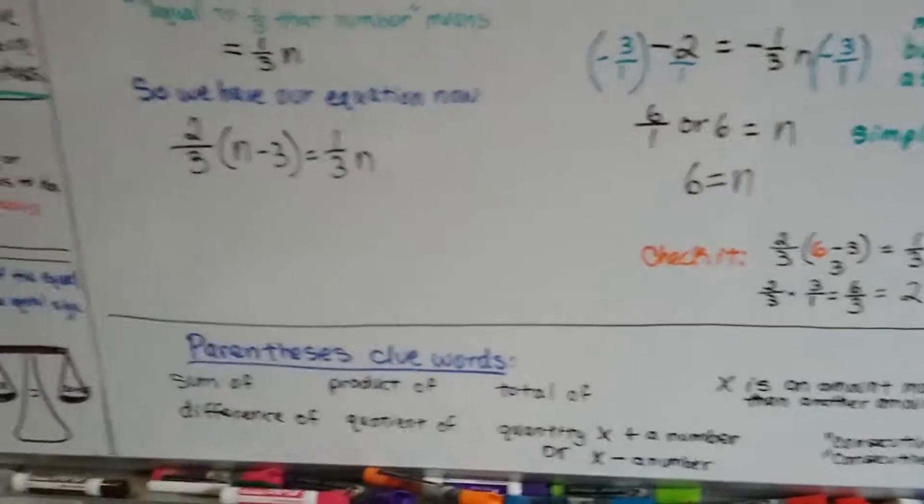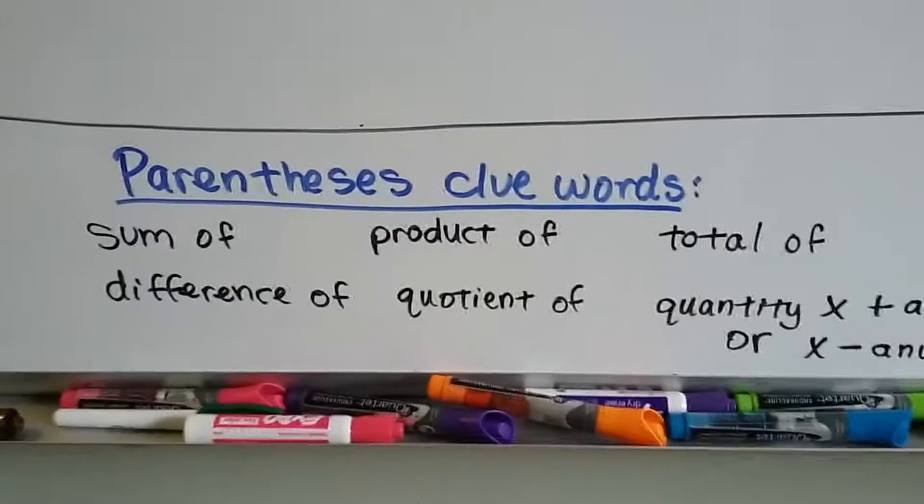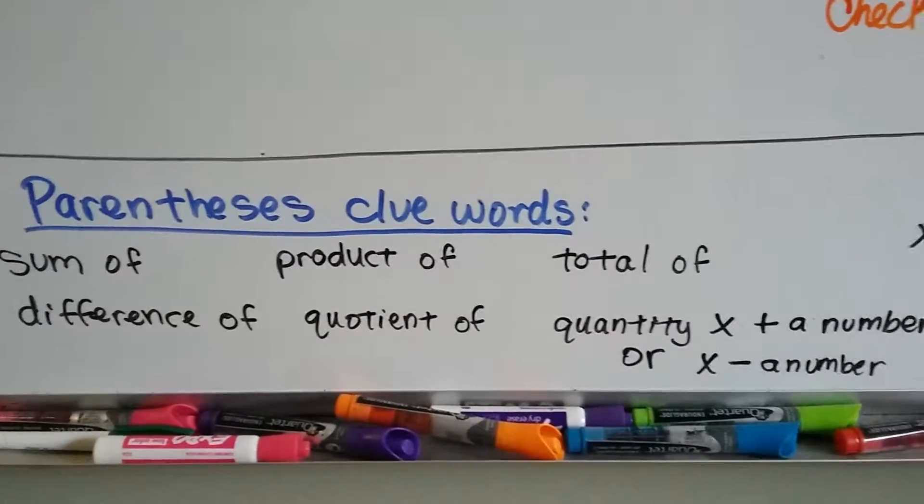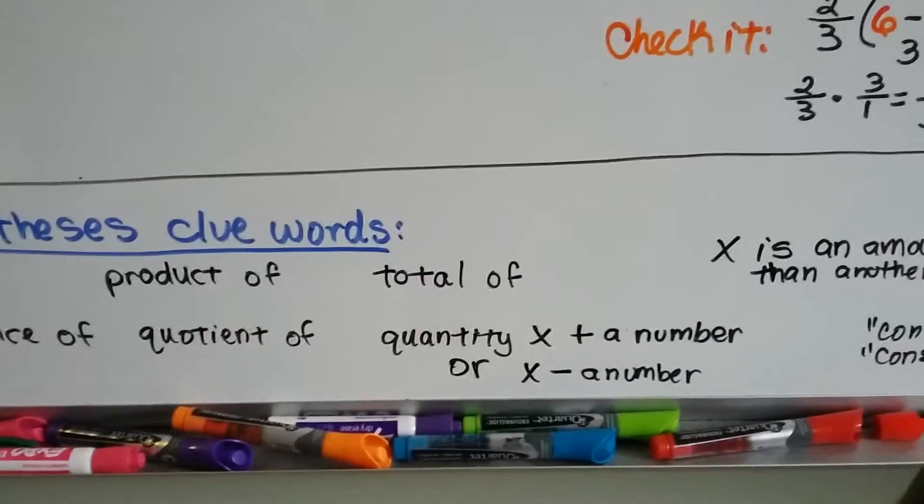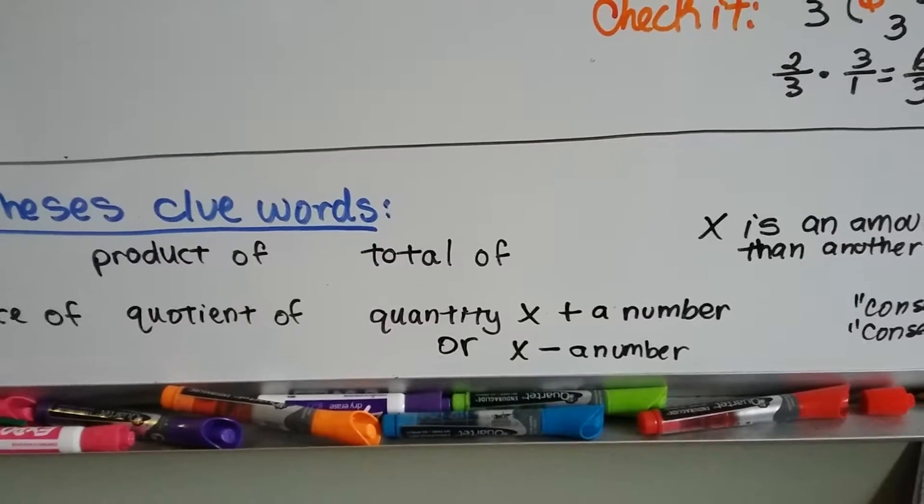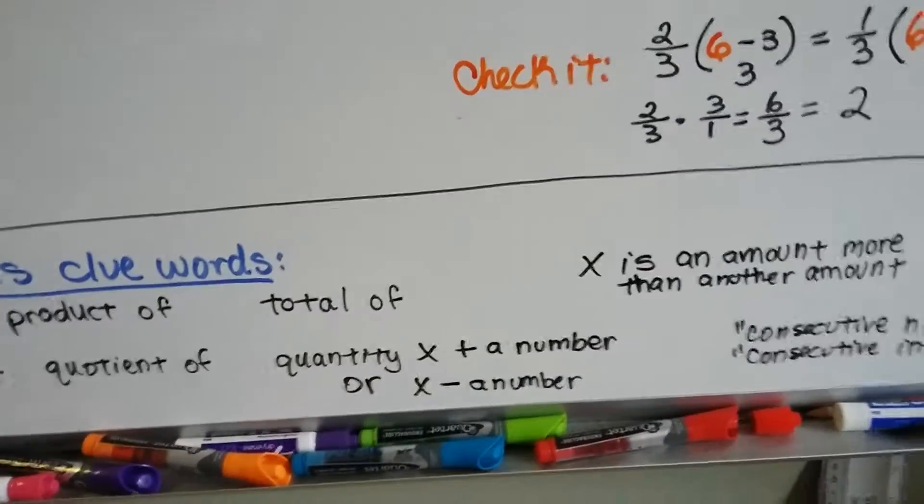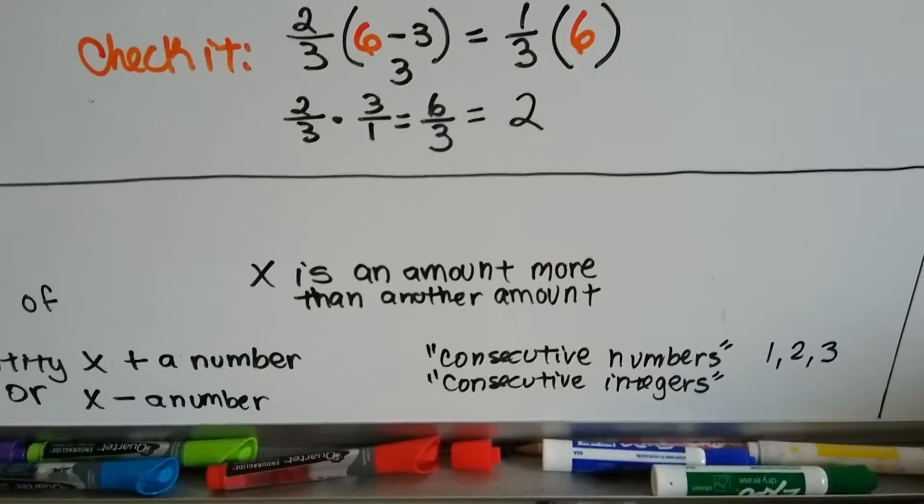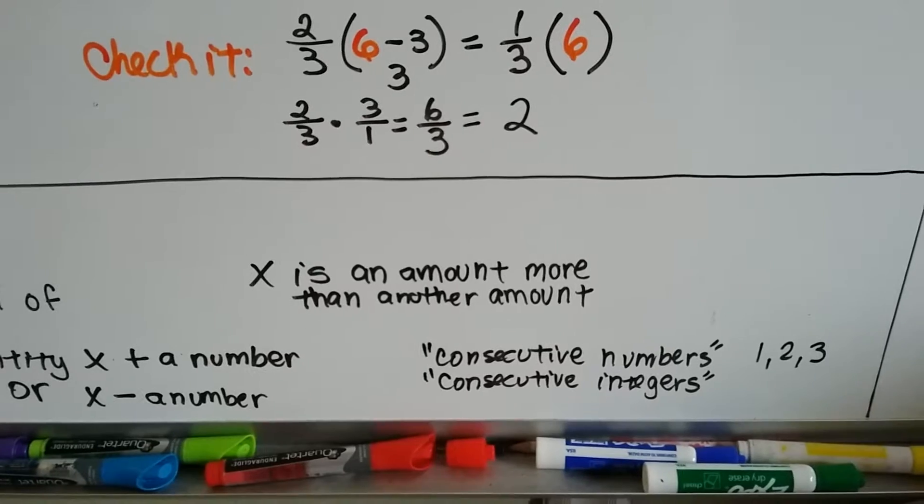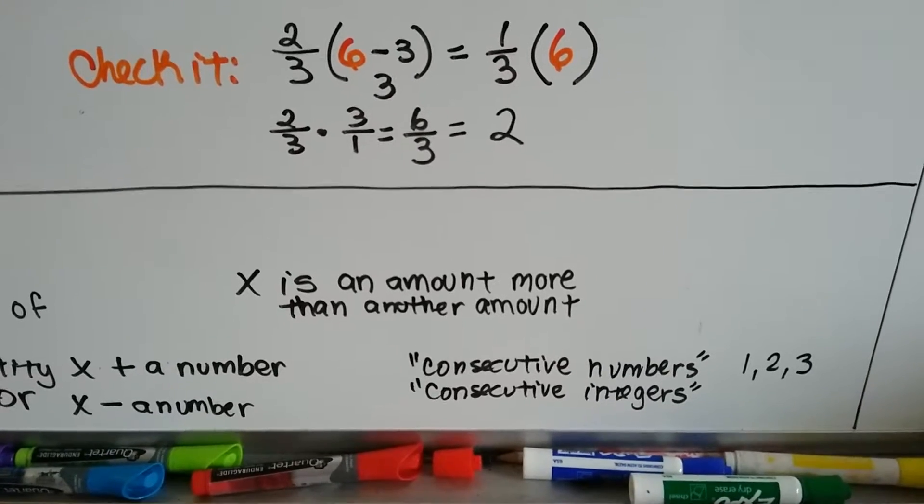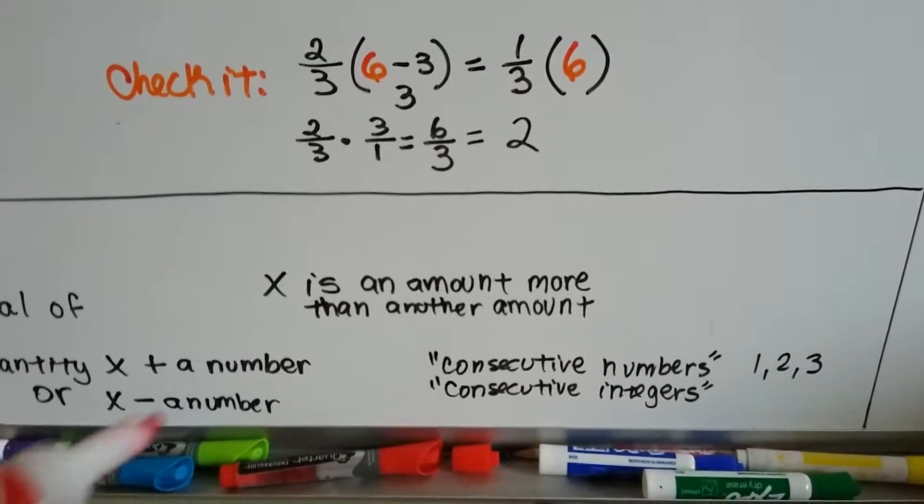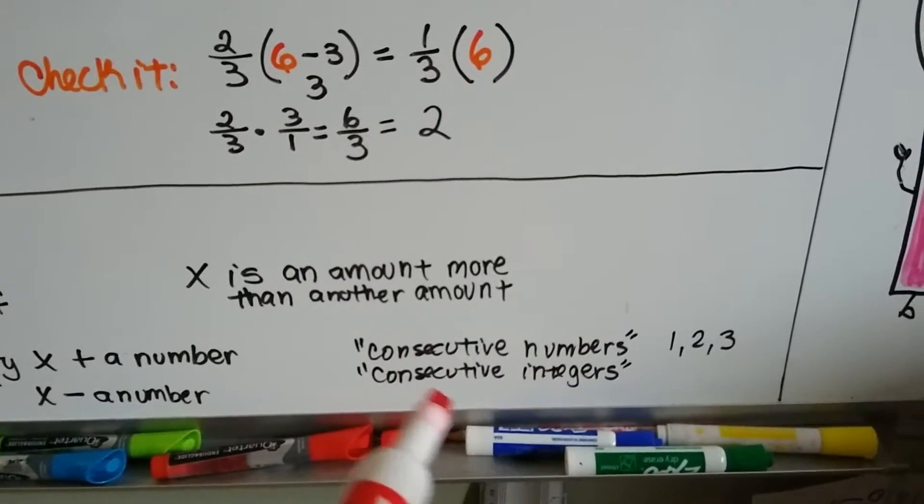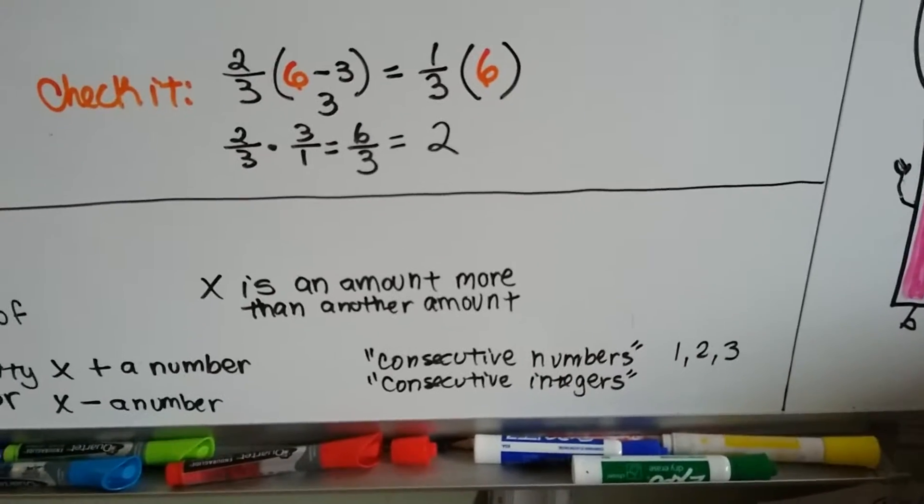So, there's some parentheses clue words that I wanted to show you. If in the word problem, you see sum of, difference of, product of, quotient of, total of, quantity, x plus a number, or quantity, x minus a number, or, if you see, x is an amount more than some other amount, like, x is $5 more than the red balloons. That's telling you that we're going to have to put that in parentheses.